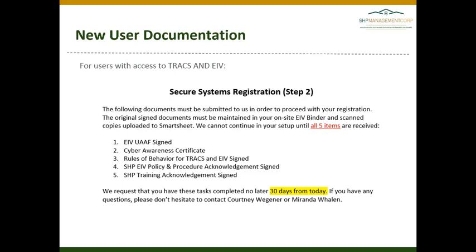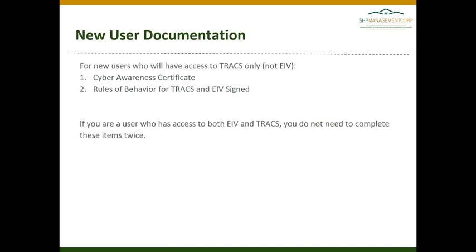Please be sure that you are taking the time to review our policy and procedure, as well as the training documents included with that acknowledgement, and that you are reviewing the Rules of Behavior for TRACS and EIV so that you are familiar with what is required from you for use of these systems. We request that these items be completed within 30 days. For users who will have access to TRACS only with no EIV access, you are still required to complete the Cyber Awareness Certificate as well as the Rules of Behavior for TRACS and EIV. If you have access to both systems, you do not need to complete these items twice.